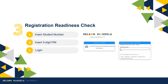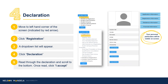Step 3: Make use of your student number and the five-digit PIN to access the registration portal. Step 4: On the right-hand side of your screen, your personal particulars will reflect, and on the left, the steps to registering for your first year.